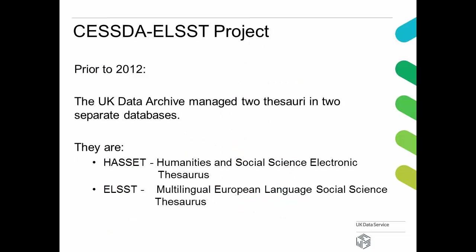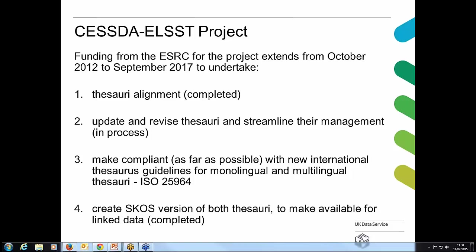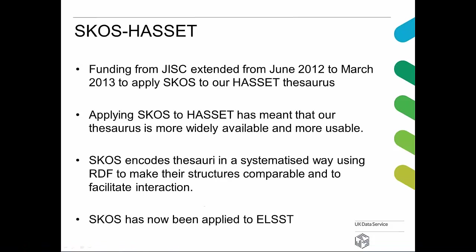The CESTA ELST project — prior to 2012, the UK Data Archive managed two thesauri in two separate databases: HACET and ELST. Funding from the ESRC for the project extends from October 2012 to September 2017 to undertake the thesauri alignment, which is completed; update and revise the thesauri and streamline their management, which is in process; make compliant as far as possible with new ISO international thesaurus guidelines; and create SKOS versions of both thesauri to make available for linked data, which is completed. SKOS HACET funding from DISC extended from June 2012 to March 2013 to apply SKOS to our HACET thesaurus. Applying SKOS to HACET has meant that our thesaurus is more widely available and more usable. SKOS encodes the thesauri in a systemized way using RDF to make their structures comparable and to facilitate interaction. SKOS has now been applied to ELST.